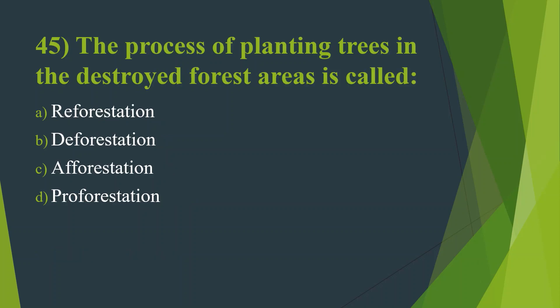Forty-fifth question: The process of planting trees in the destroyed forest area is called — Option A, Reforestation. Option B, Deforestation. Option C, Afforestation. Option D, Proforestation. Answer is Option A, Reforestation.